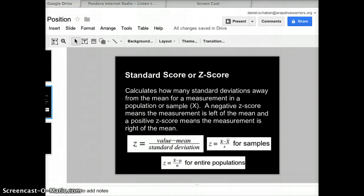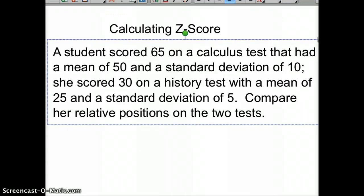A negative z-score means the measurement is to the left of the mean, and a positive z-score means it's to the right. So you can compare data that doesn't necessarily coincide with each other. Here's an example of that.